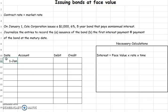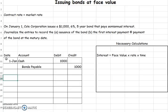Let's issue this bond. A company issues a bond because they want money, so they get cash — cash goes up. Because it was issued at face value, they received the full $1,000. We set up a bonds payable, which is a liability account saying that we promise to pay this back in five years. So cash goes up and bonds payable goes up.